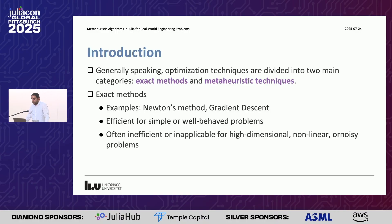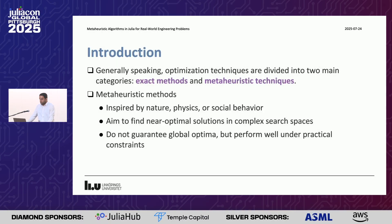We can also divide methods into two main categories: exact methods and metaheuristic techniques. Exact methods include algorithms like Newton gradient descent — efficient for simple and small problems, but inefficient or inapplicable for high-dimensional complex non-linear ones. On the other side, metaheuristic methods inspired by nature, physical laws, social behaviors, or human interactions aim to find near-optimal solutions in complex search spaces and don't guarantee a global optimum, but can find near-optimal ones.